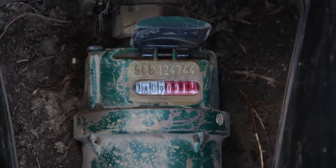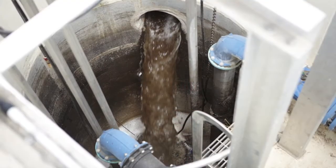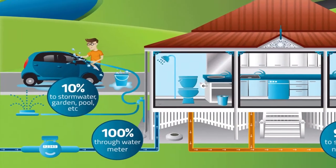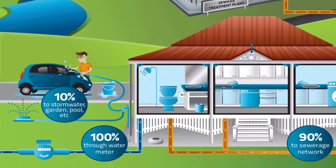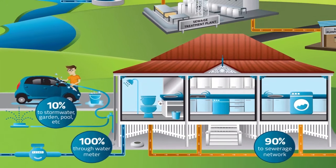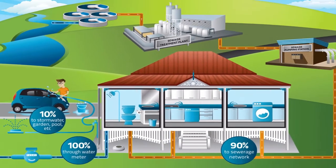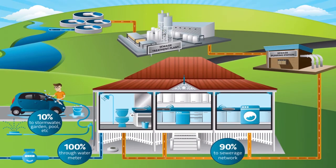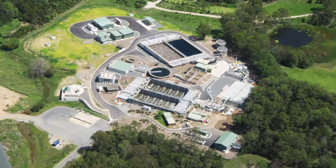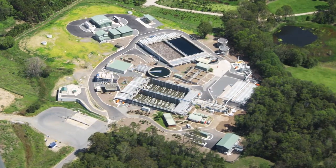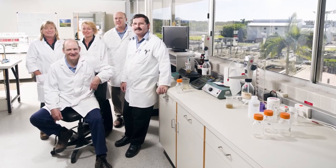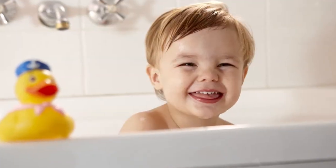Ninety percent of the water that enters your property through your meter ends up as sewage, and this is how we calculate the sewage usage. This percentage is the industry standard for calculating sewage usage, and is used by other water and sewage utilities in Australia and supported by independent external research conducted in South East Queensland.